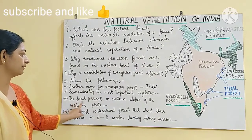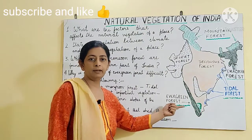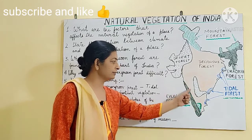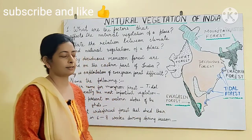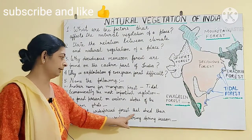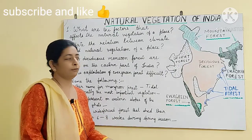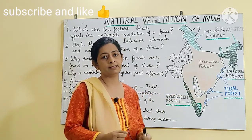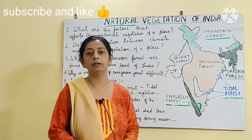The third is the forest present on the western slopes of the Western Ghats — that is evergreen forest. The fourth is the most widespread forest that sheds their leaves for six to eight weeks during the spring season. This is a very important characteristic of the deciduous forest: they shed their leaves for six to eight weeks during the spring season.